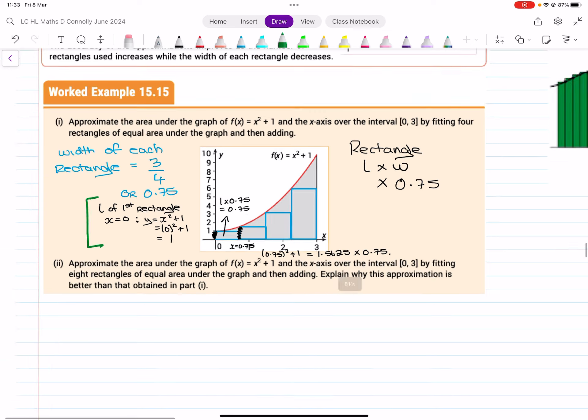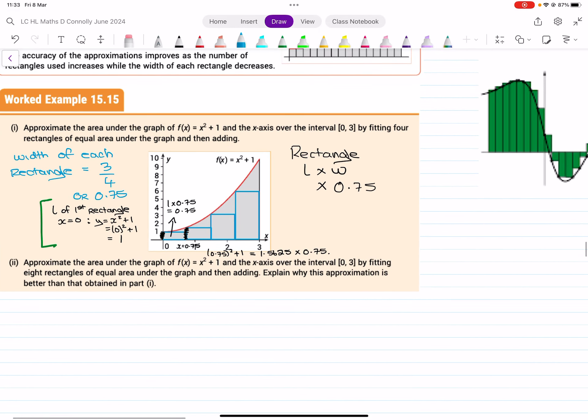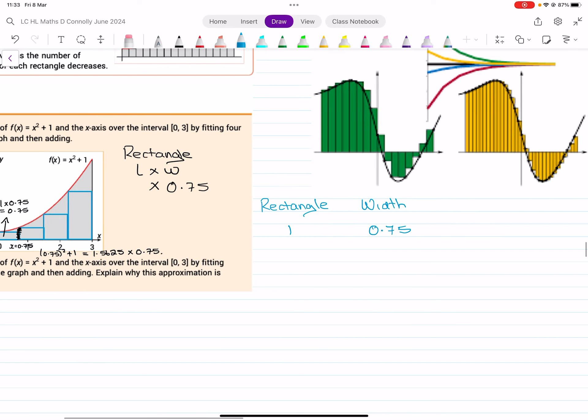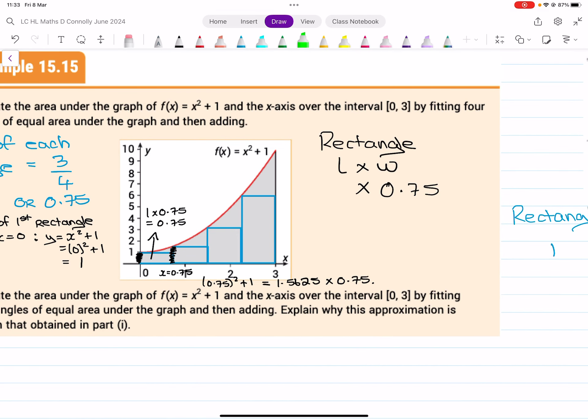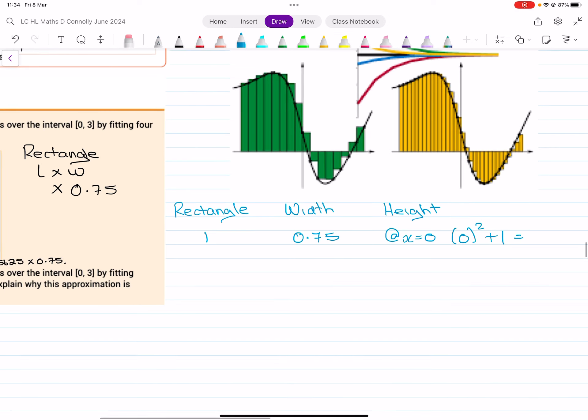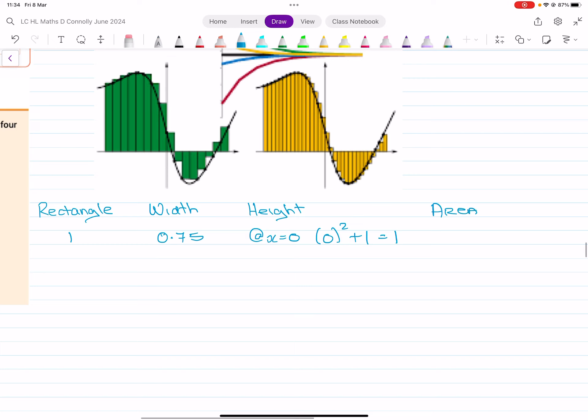So essentially what we're going to have is rectangle number one has a width of 0.75, and then to get its height, the height of rectangle one is at x equal to zero, so it becomes zero squared plus one. That is one, and then to get the area we multiply the width by the height, which in this case is 0.75.